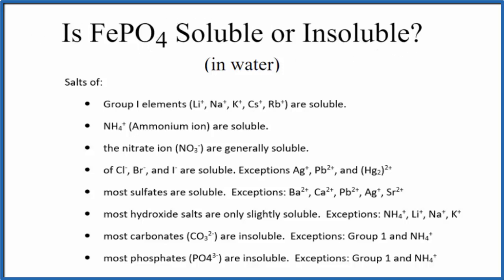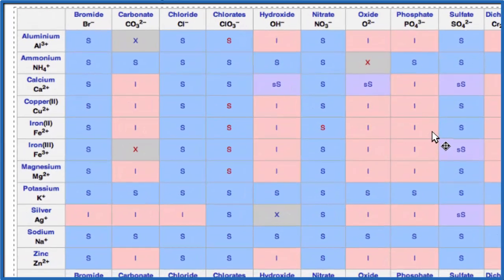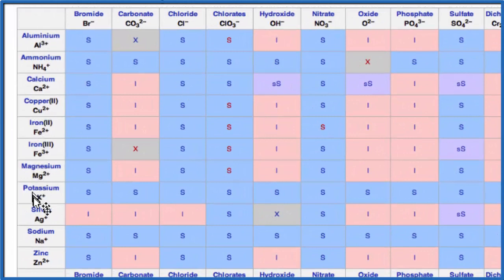We could also look at a solubility chart. So here's a solubility chart. Positive ions on the left, on the top, the negative ions.